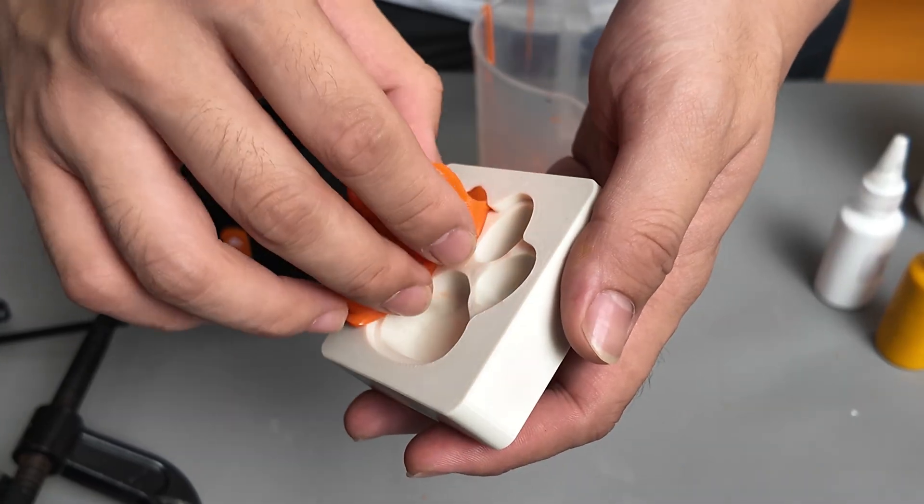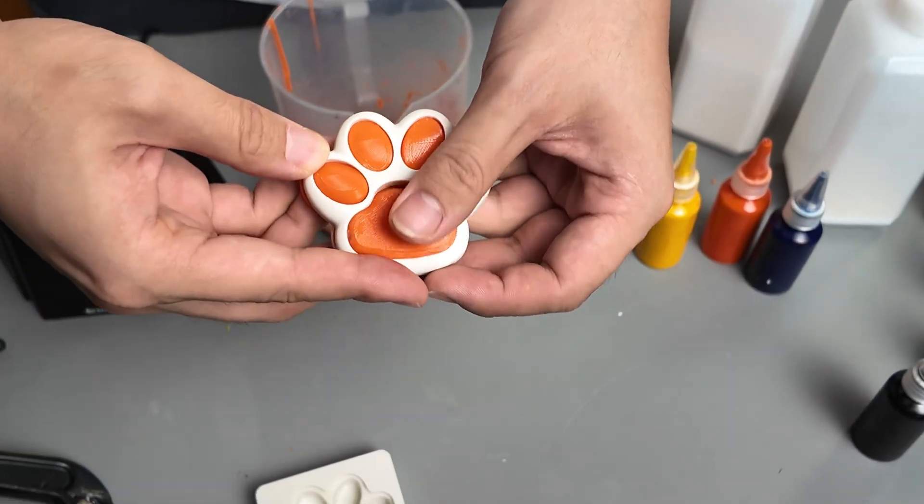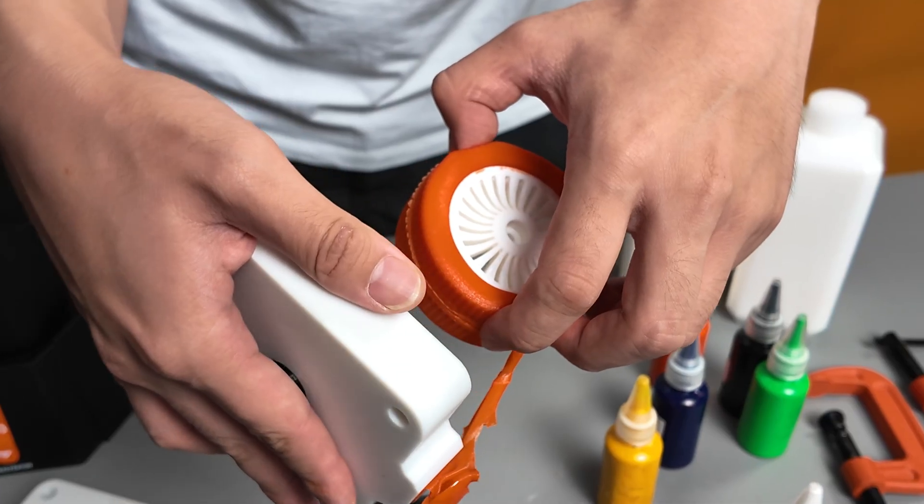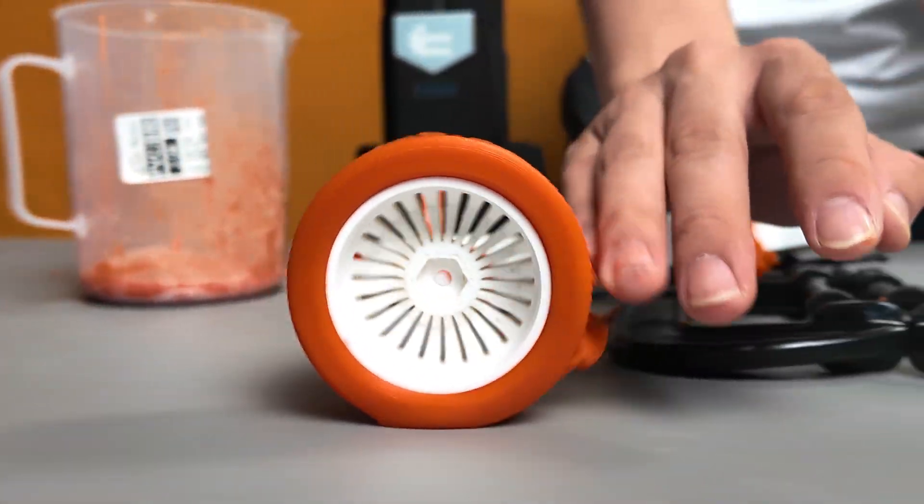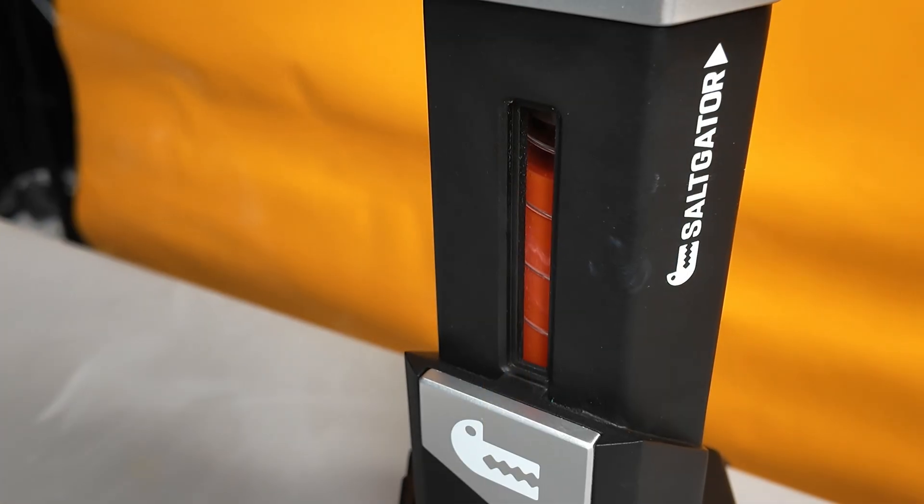Today, we'll explore two exciting approaches: creating soft material encapsulated within a hard shell and hard material embedded within a soft exterior. Both open up endless possibilities for unique, functional, and creative designs, so let's dive in.